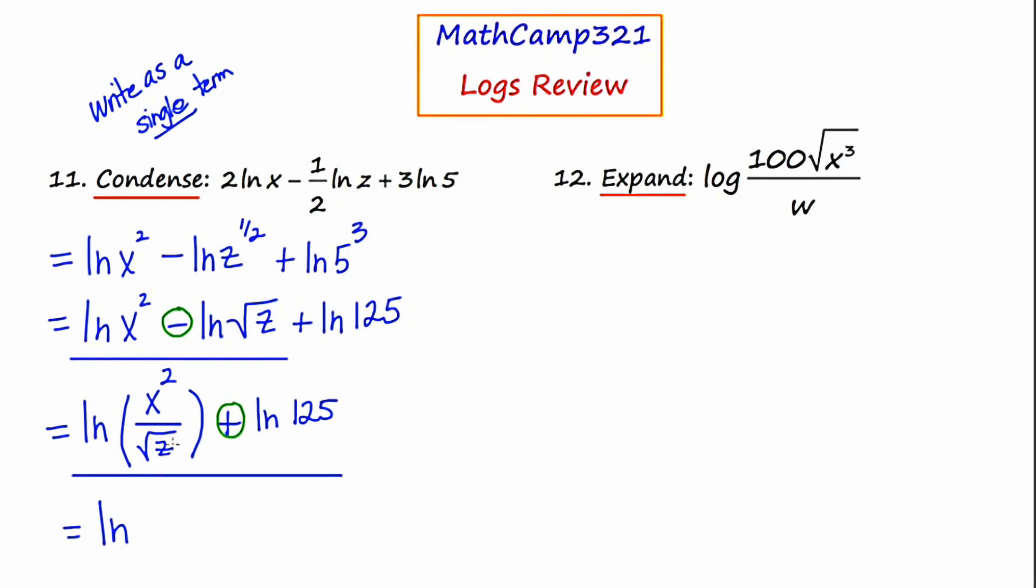Now I have two terms left, but this time they're linked by a plus. A sum of logs comes from a product. So I'm going to write the word natural log one time and multiply X squared over root Z times 125, which leaves me with 125 X squared over root Z. This is the condensed form of the original expression. The word natural log only occurs one time in our answer.